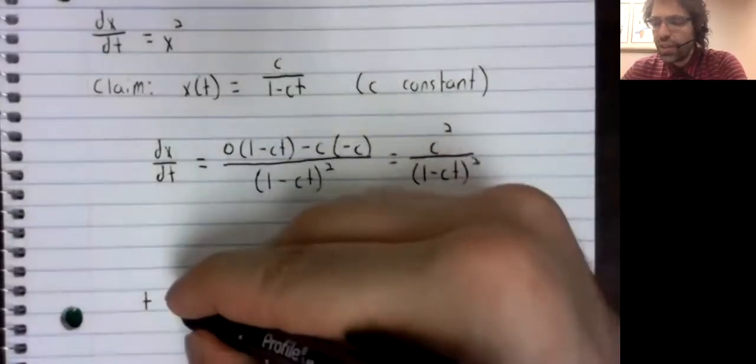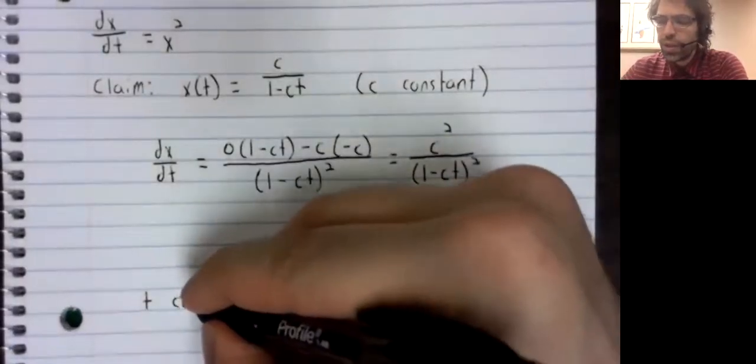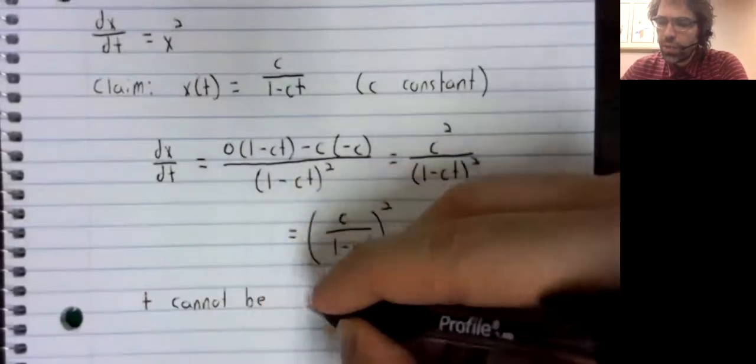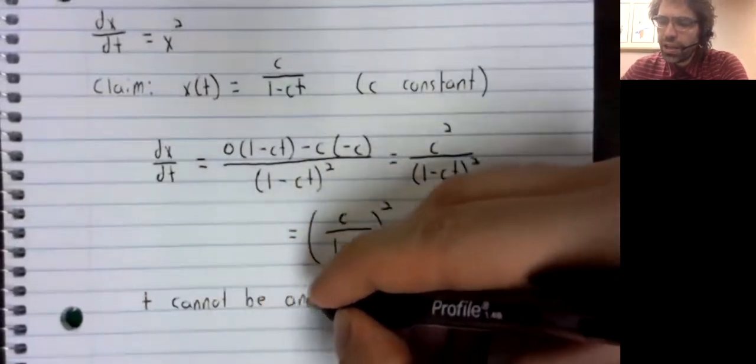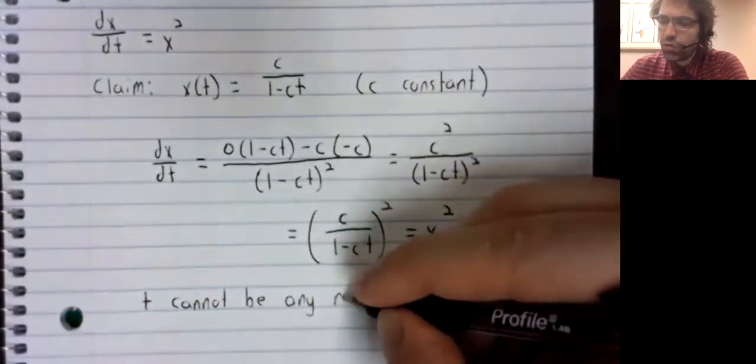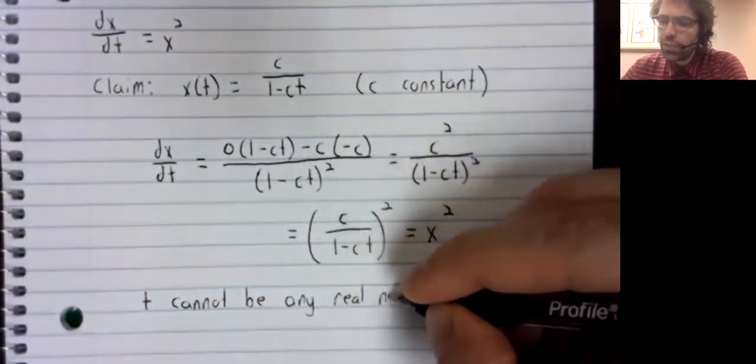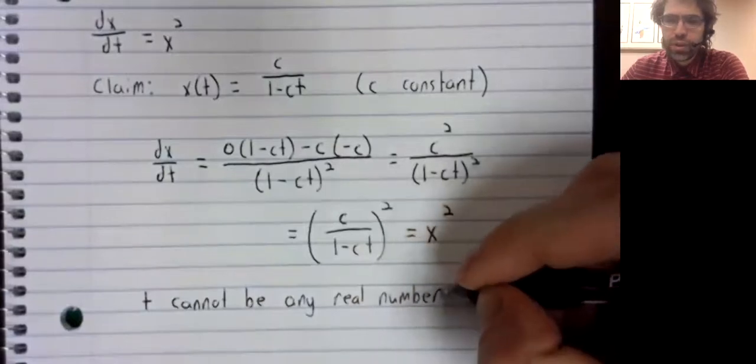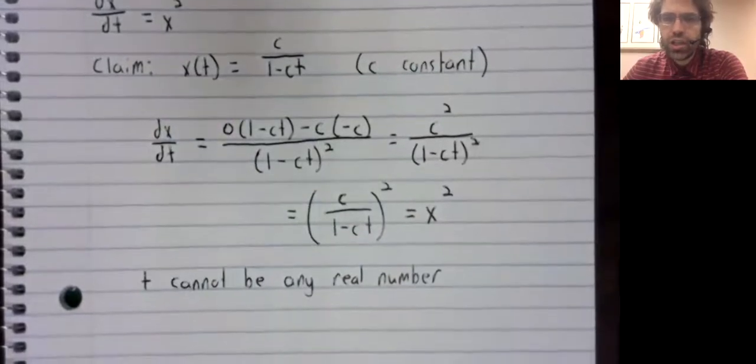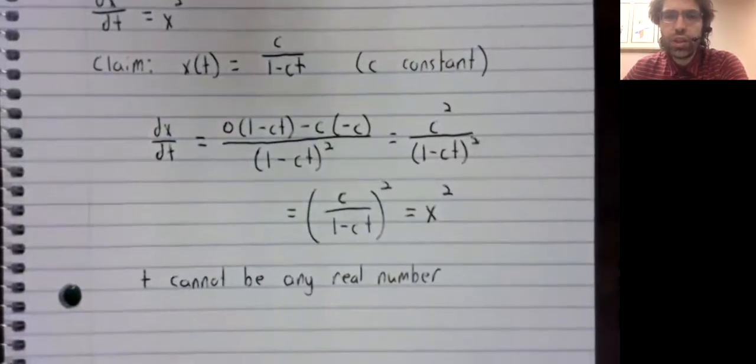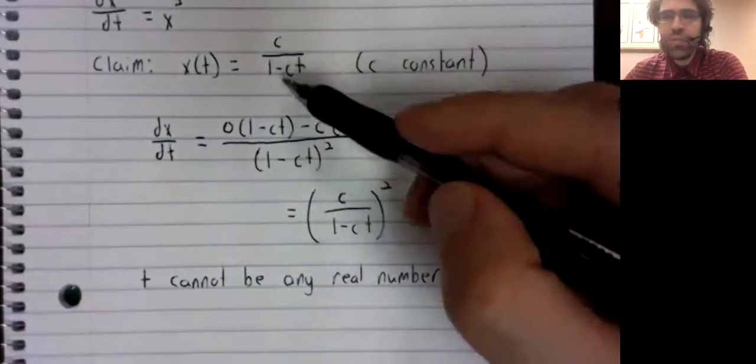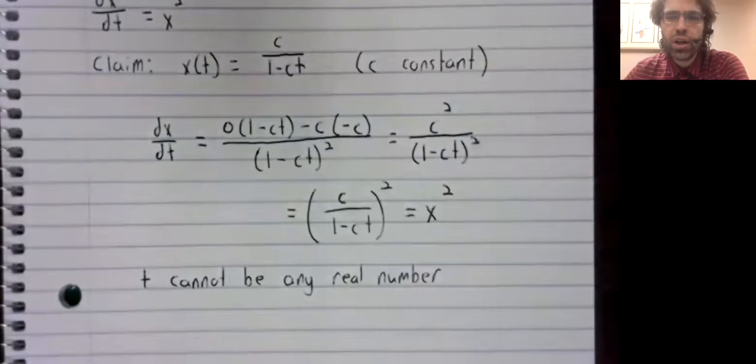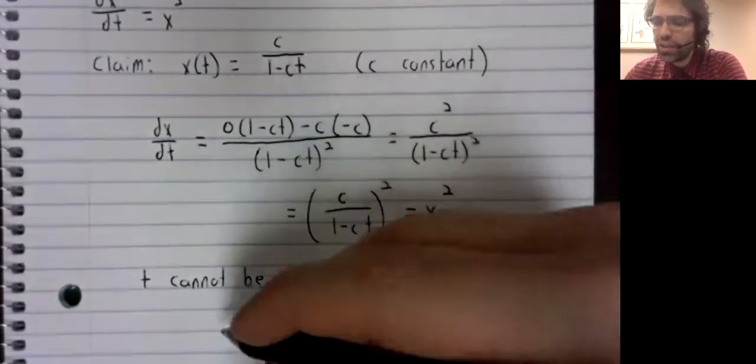t here cannot be any real number. There's a restriction on what this variable can be that comes from this division. We of course cannot divide by zero.